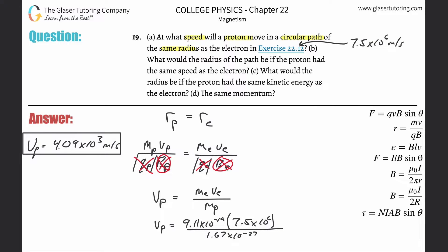Letter B: What would the radius of the path be if the proton had the same speed as the electron? So what we're doing now is asking: what would the radius of the path be if the proton had the same speed as the electron?